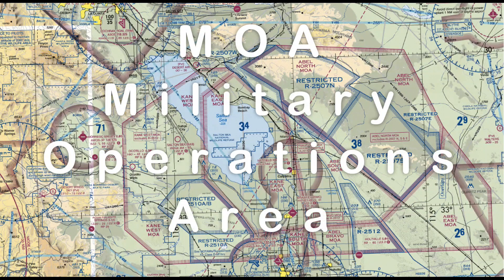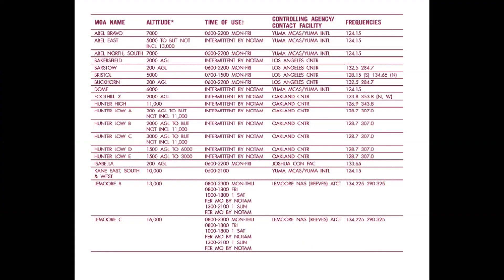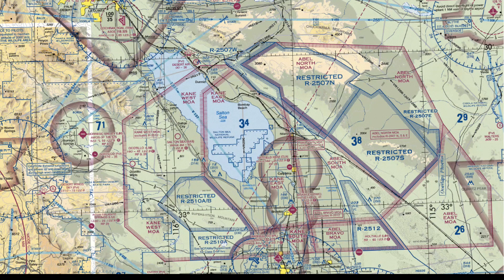Military operations areas, or MOAs, are depicted on the sectional chart with a magenta hashed outline. They have named designations such as ABLE East. Additional information on the particular MOA is also provided in the sectional chart legend. You'll often find MOAs closely associated with restricted areas. While permissions aren't required to enter an MOA, extreme caution is.